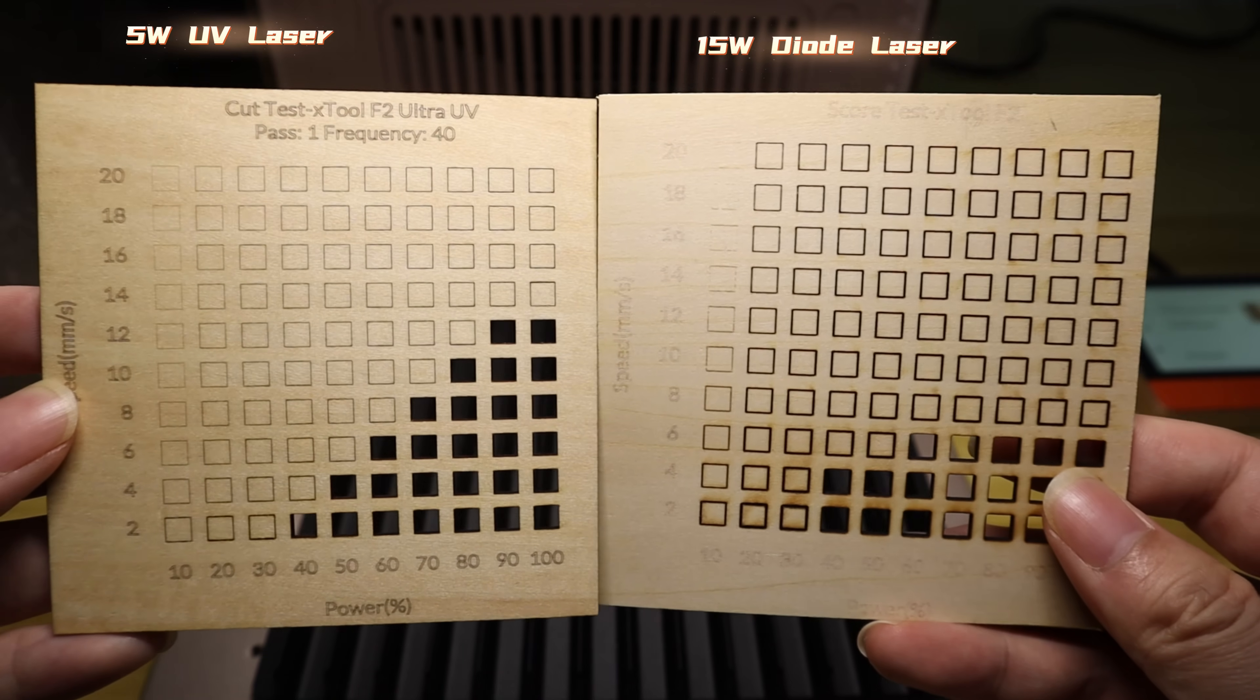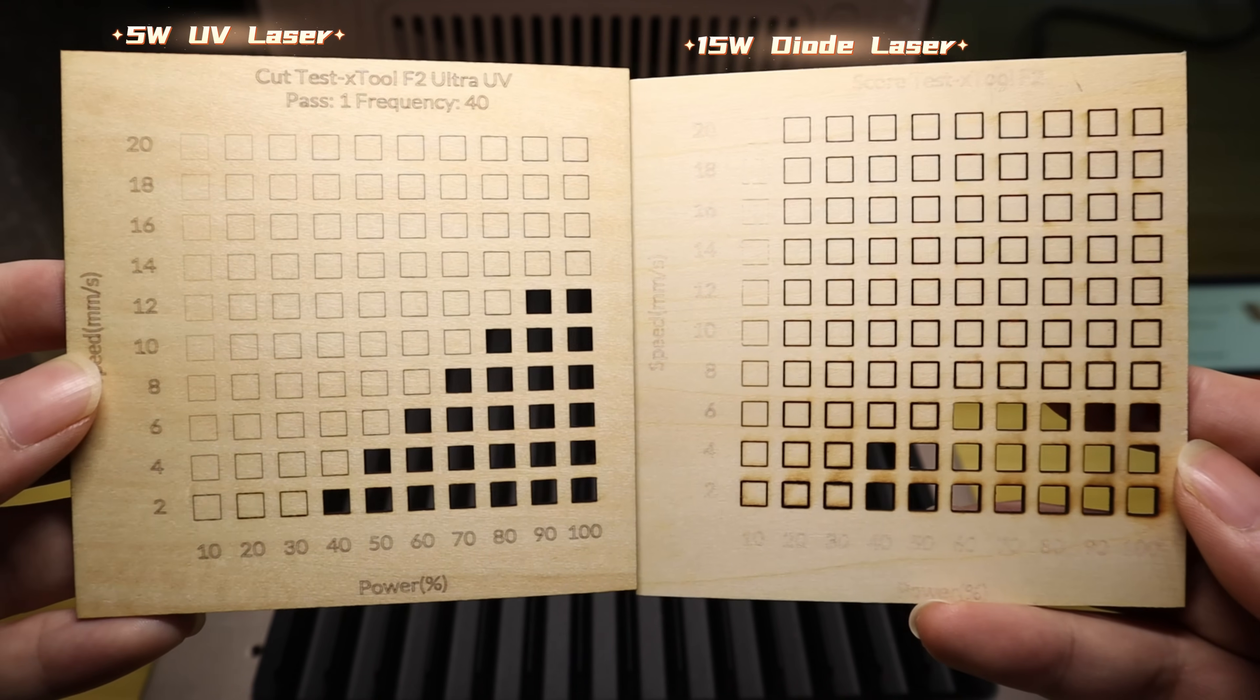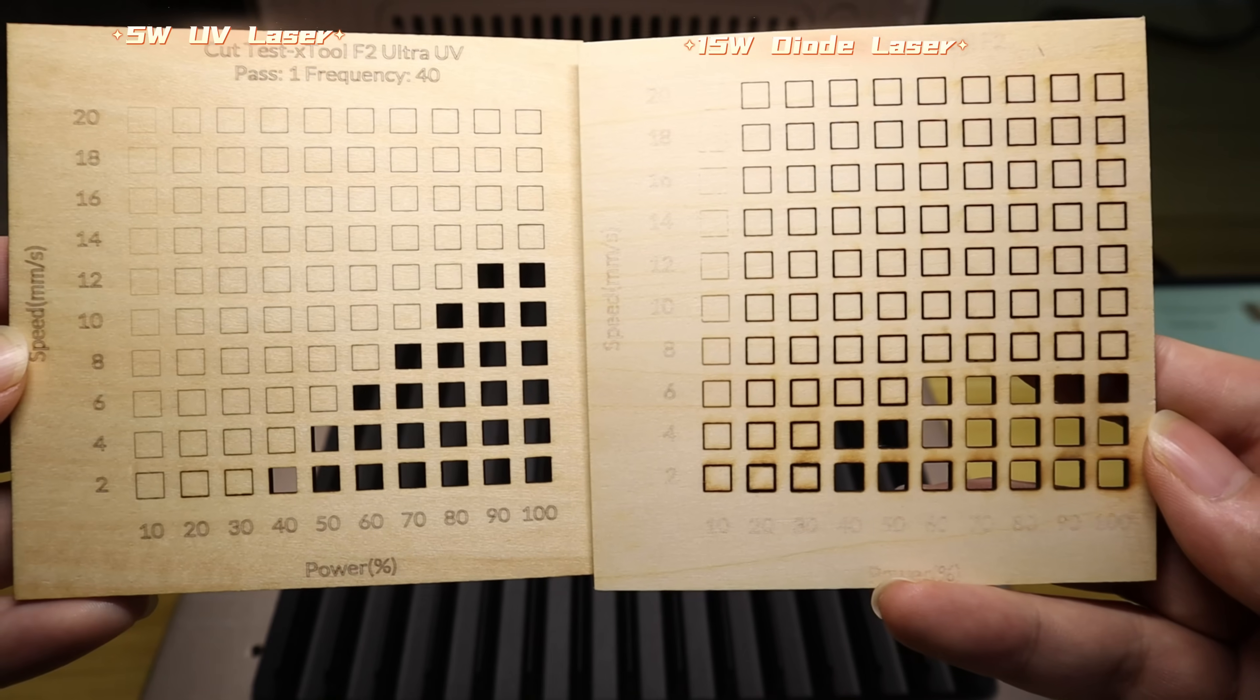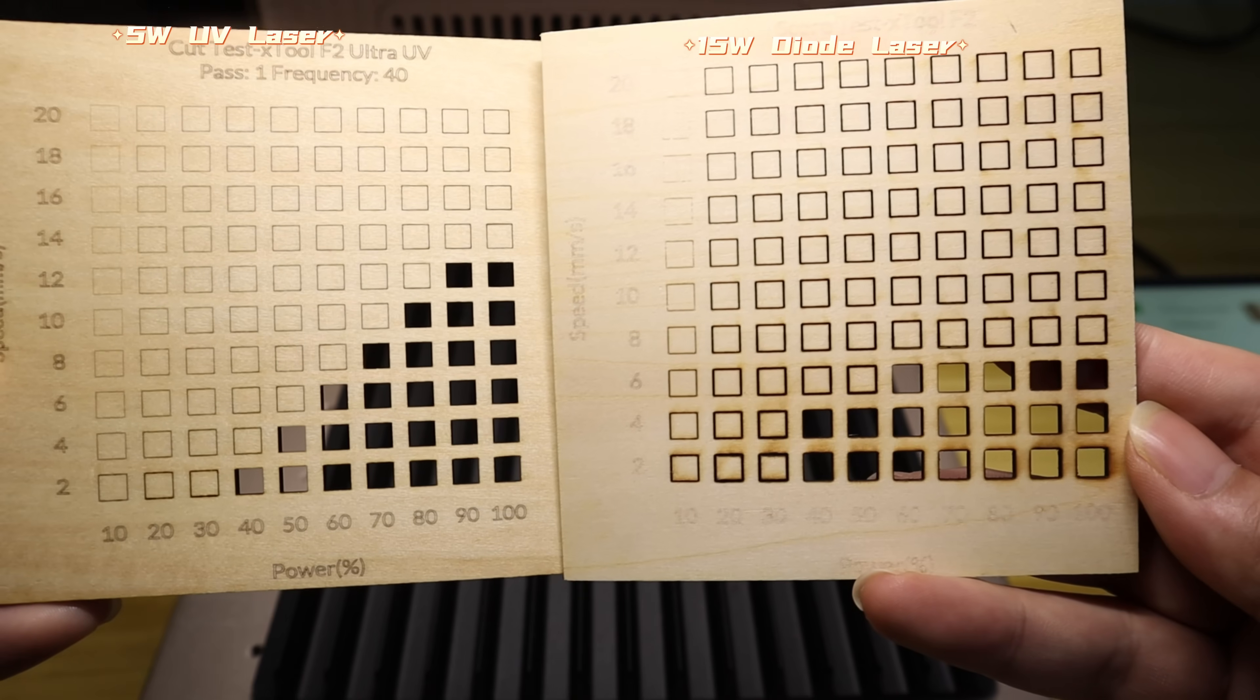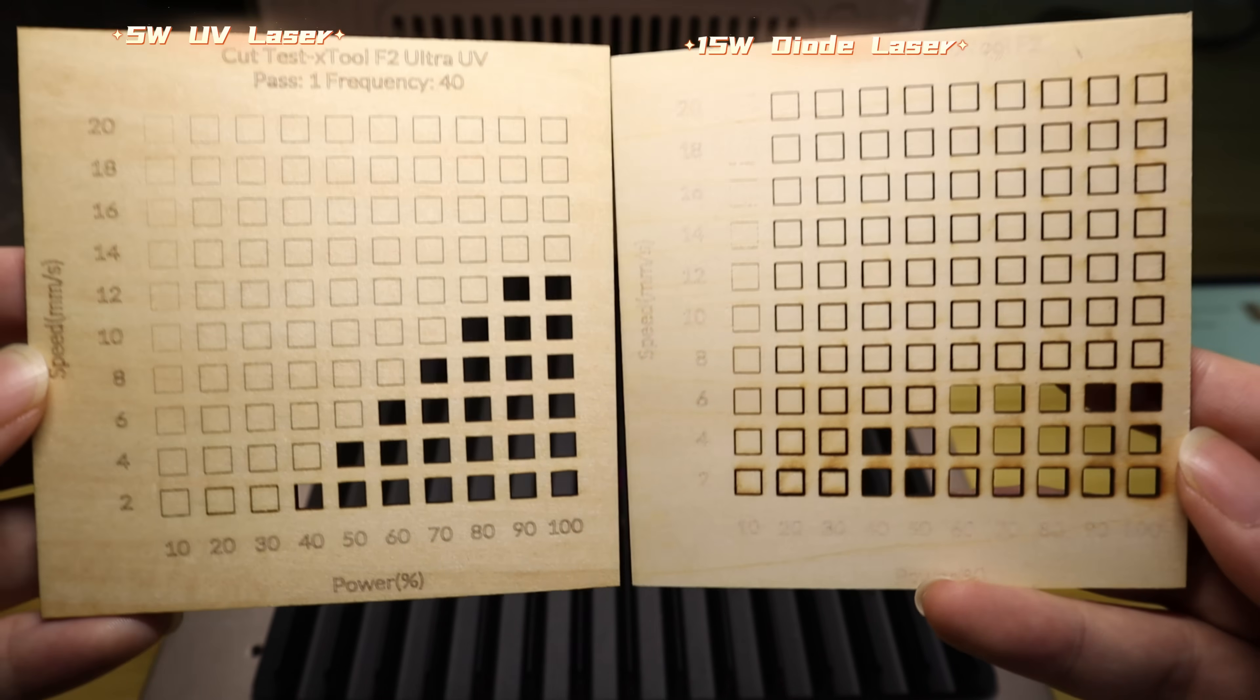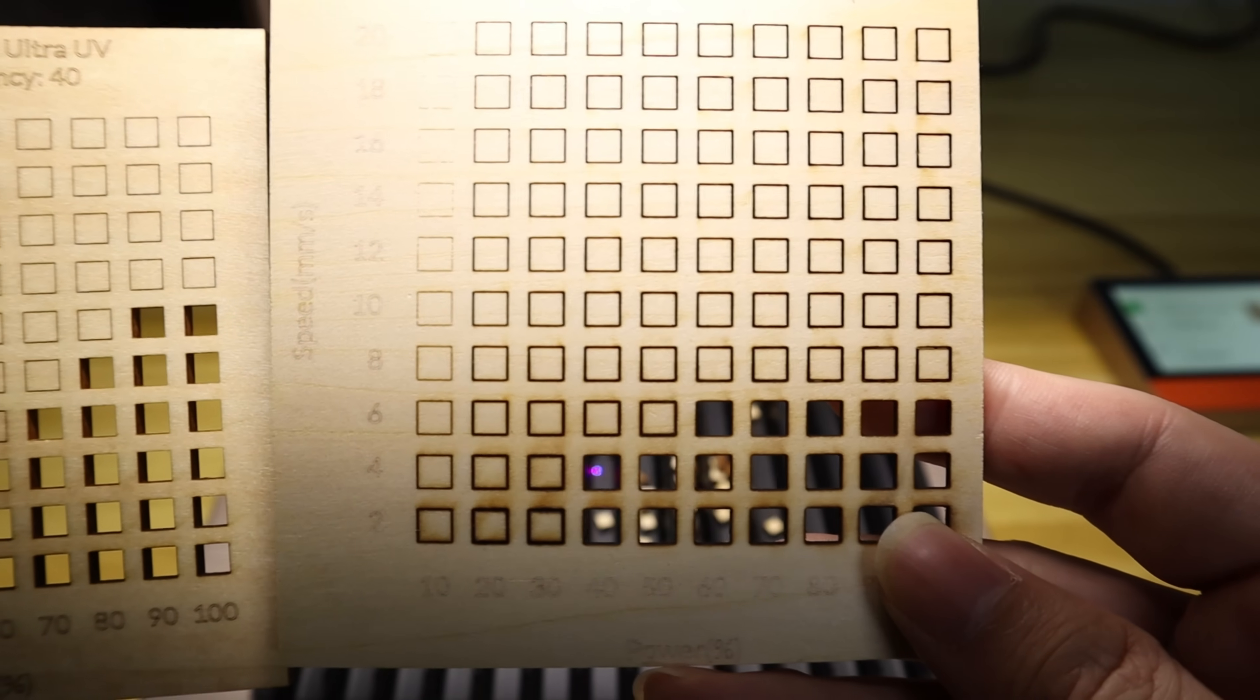The left shows the cutting test result for the ACE2-F2 Ultra UV laser on 3 mm plywood. The results indicate that a 5W, 355nm laser power can cut through 3 mm plywood in a single pass at 90% laser power, and a cutting speed of 12 mm per second. The right shows the cutting test from the ACE2-F2 portable laser's 15W diode laser on 3 mm plywood. Its results indicate that cutting 3 mm plywood requires the 15W diode laser to operate at a slower cutting speed of 6 mm per second to achieve a single pass.